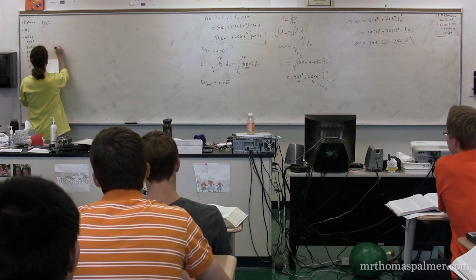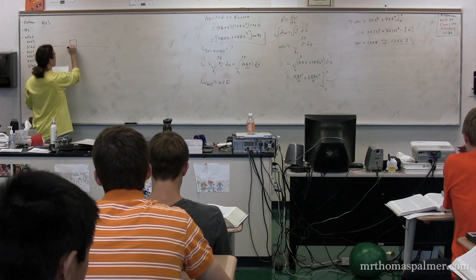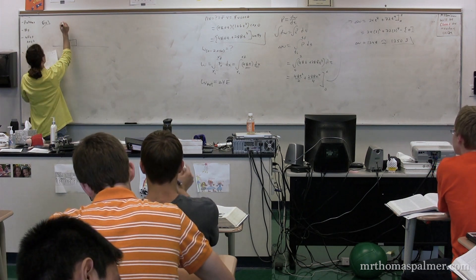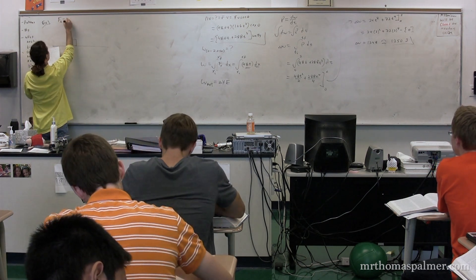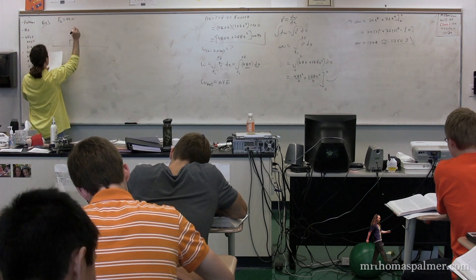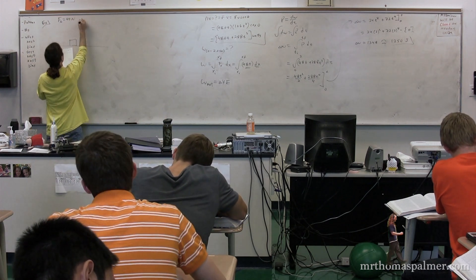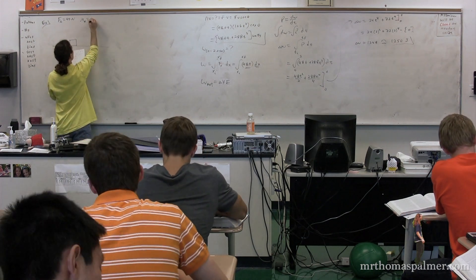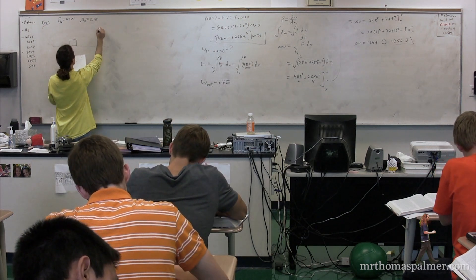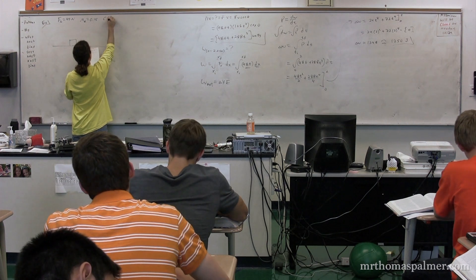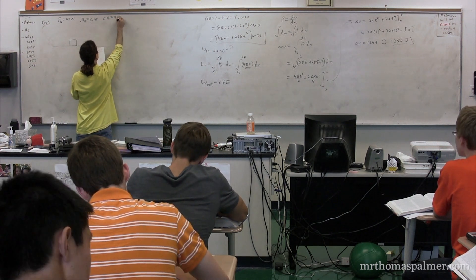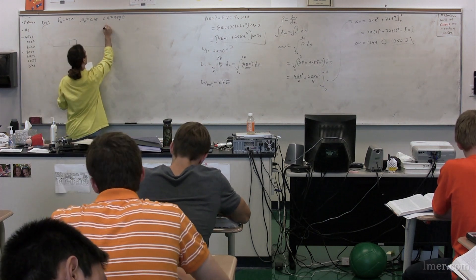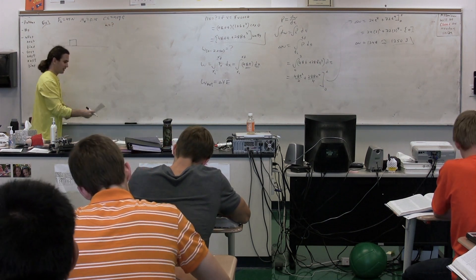Let's say we have an object on a level surface. The force applied on this object is 45 newtons. The coefficient of kinetic friction between the surface and this object is 0.15. It's moving at a constant velocity of 4.5 meters per second to the right. We're trying to figure out the mass of the object.